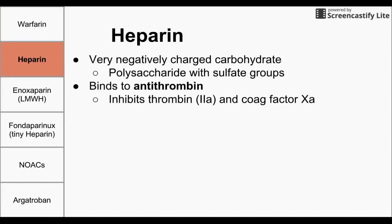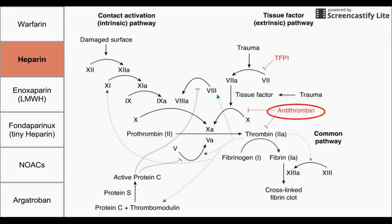Next, we're going to talk about heparin. Heparin is a carbohydrate that is incredibly negatively charged and littered with sulfate groups. Heparin binds directly to a protein called antithrombin. Antithrombin and heparin together bind thrombin and coagulation factor Xa. Antithrombin works without heparin, but heparin enhances the effects of antithrombin by a factor of 10,000. We can see antithrombin circled toward the right of this diagram — it has an inhibitory effect on factor Xa production and also on thrombin. Adding heparin increases the effects of antithrombin 10,000-fold.